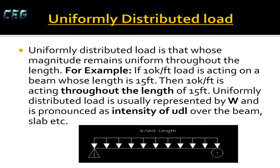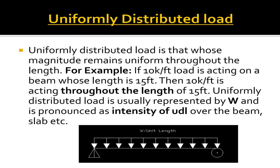Uniformly distributed load is that whose magnitude remains uniform throughout the length. For example, if a 10 kips per foot load is acting on a beam whose length is 15 feet, then 10 kips per foot is acting throughout the length of 15 feet. Uniformly distributed load is usually represented by W and pronounced as intensity of UDL over the beam, slab, etc.